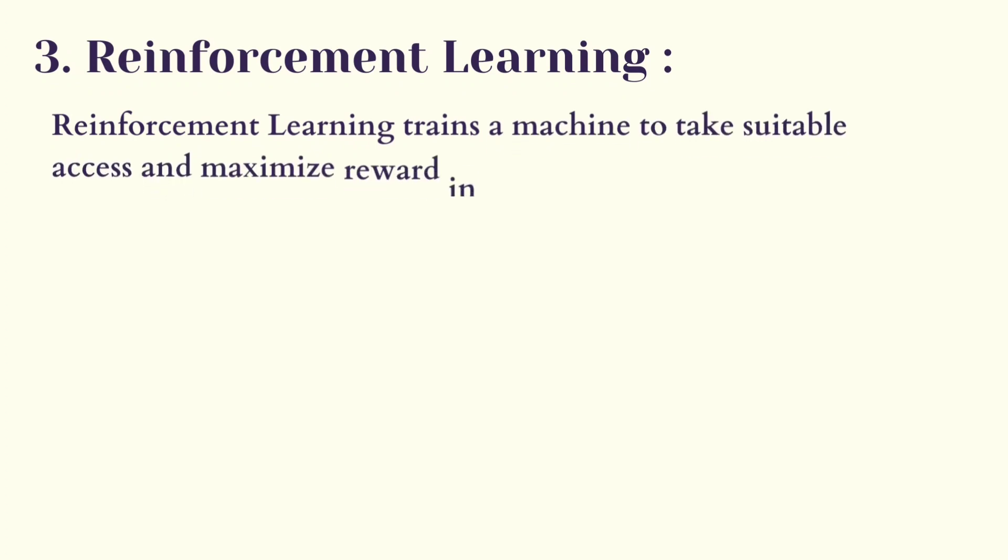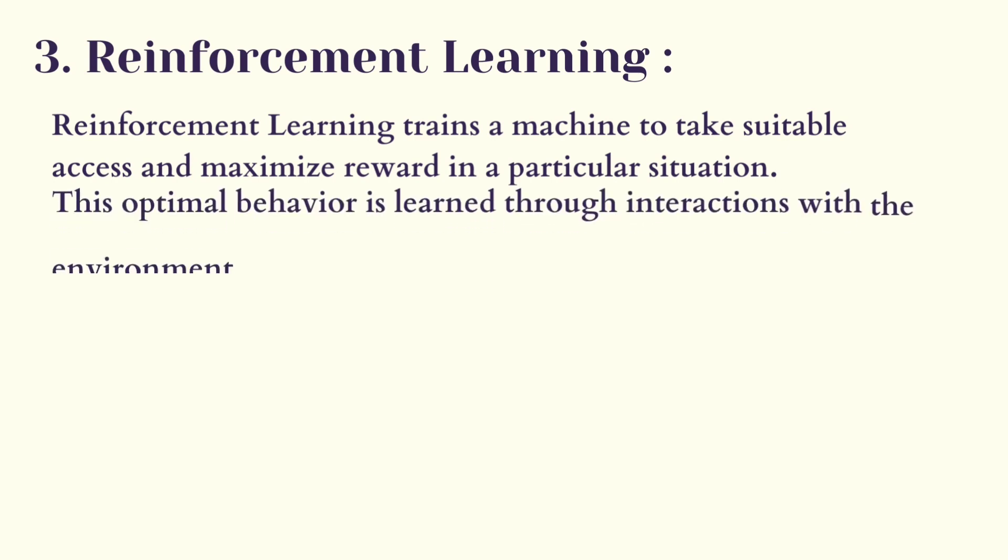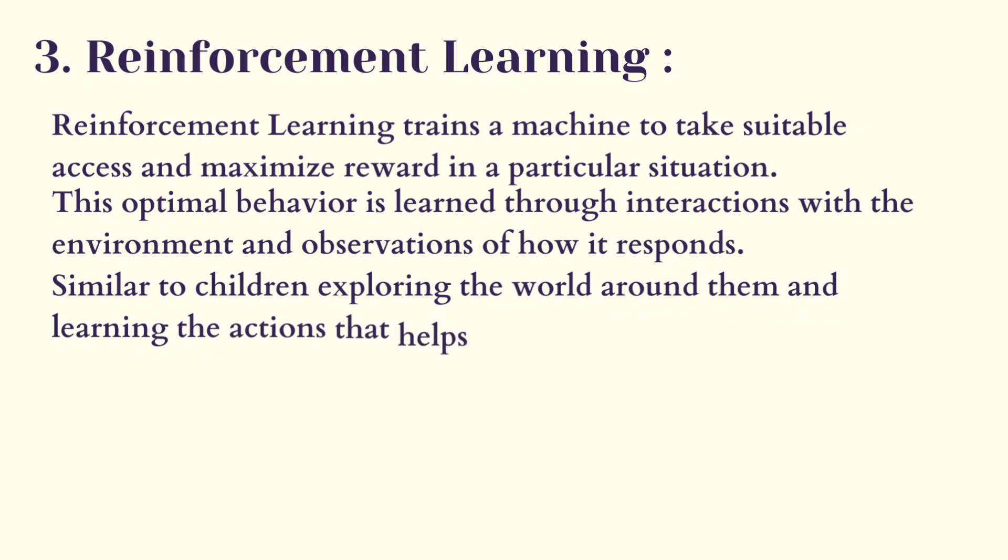Reinforcement learning trains a machine to take suitable actions and maximize rewards in a particular situation. This optimal behavior is learned through interactions with the environment and observations of how it responds, similar to children exploring the world around them and learning the actions that help them achieve a goal.